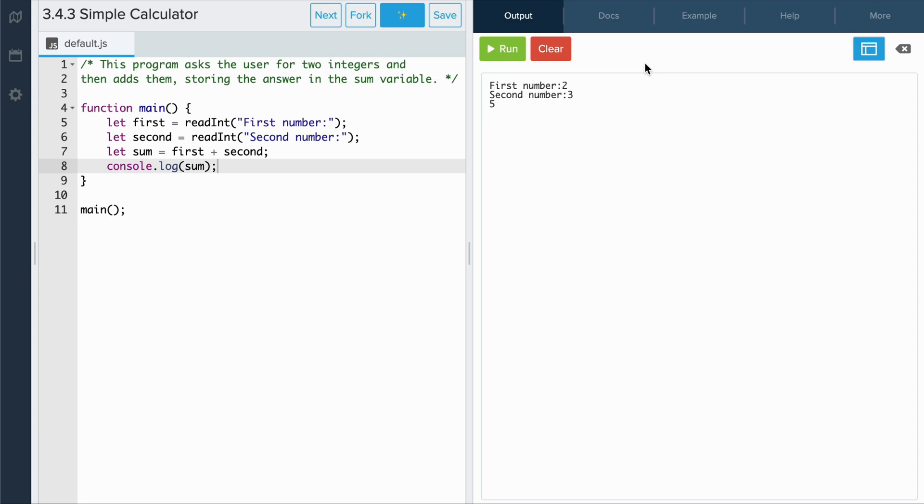If I were to run this program and enter two for the first number and three for the second number, I would expect the sum five to appear on the screen. So this program is working correctly.